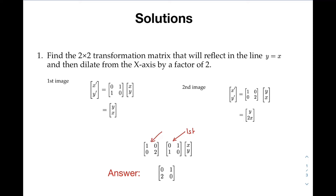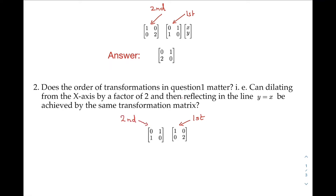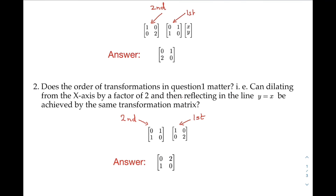Using this observation we can answer the second question. If we want to apply the dilation first and then the reflection, the matrices need to be multiplied in this order. So now the matrix that will perform the dilation first and the reflection second is this one. Notice we have a different result from question 1 because the order of transformations does matter here.